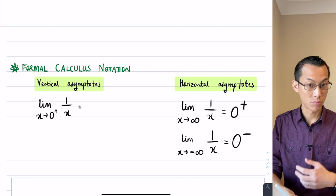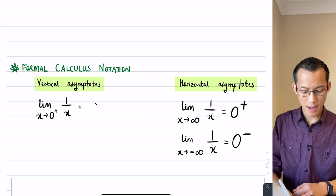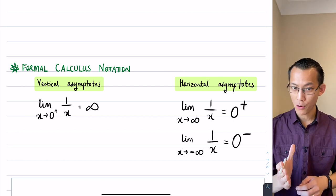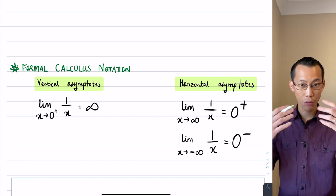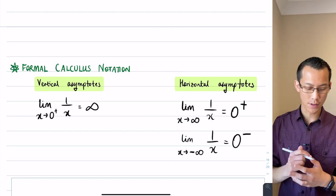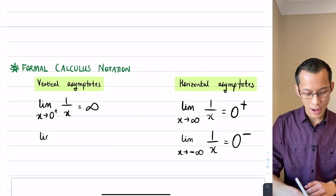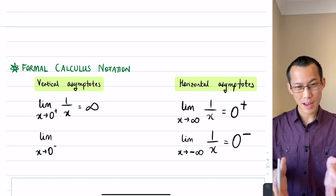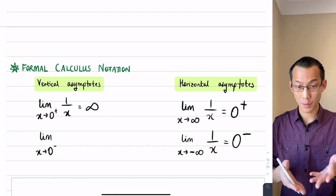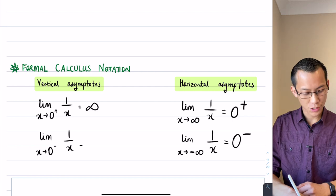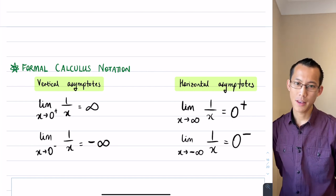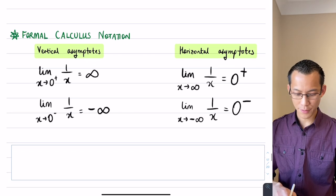So when I approach zero from the positive side and look at this function — what do I get? Well, the denominator gets small so the whole thing gets large — it goes toward positive infinity. And by contrast, when x approaches that same zero but from the negative side — approaching from the left on this function — you don't approach positive infinity, you approach negative infinity.